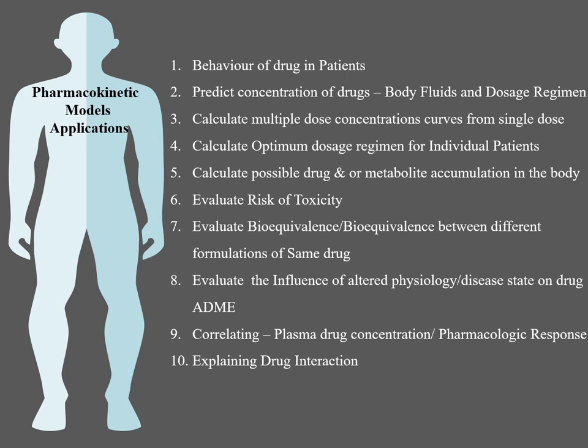Next, correlating plasma drug concentration with pharmacological response. The pharmacological response obtained can be correlated with the plasma drug concentration using pharmacokinetic models, because the pharmacological response is dependent upon plasma drug concentration. The correlation between these two can be explained with pharmacokinetic models. Next, explaining drug interactions — drug-drug interactions or drug-food interactions — whatever interactions prevail inside the body can be explained with the help of pharmacokinetic models.